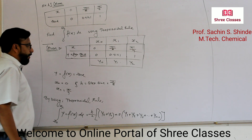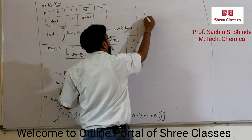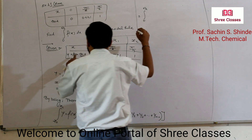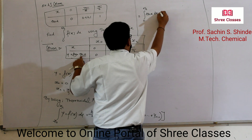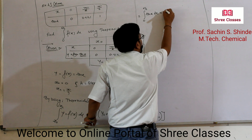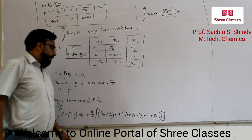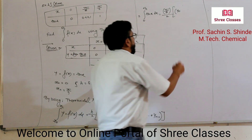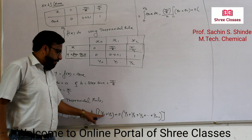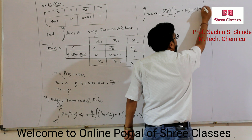Now we put all these values into the Trapezoidal Rule formula to find the integration. Integration from 0 to π/4 of tan(x) dx = h/2. h = π/8, so h/2 = π/16. Then: (y0 + y2) + 2 times y1. Since yn = y2, and the only term between y0 and y2 is y1.